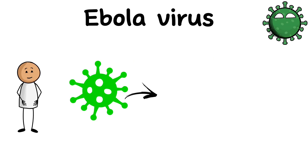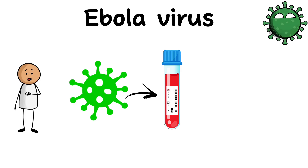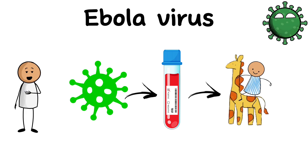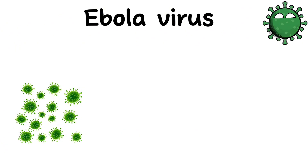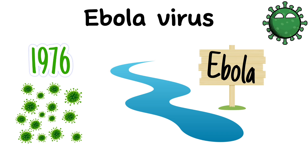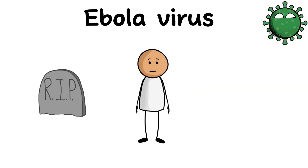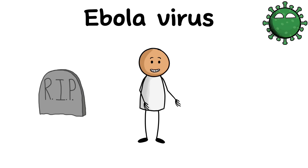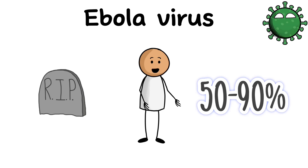The Ebola virus usually spreads through contact with blood, body fluids, and tissues of infected animals or humans. This virus was first detected in 1976 in the Ebola river, which gave it its name. The Ebola virus has several strains, some of them cause more severe symptoms than others. Mortality from the Ebola virus can be very high, reaching 50 to 90% in various epidemics.